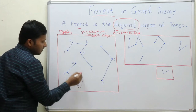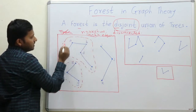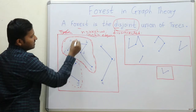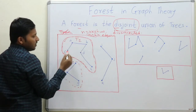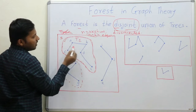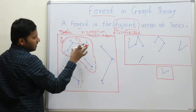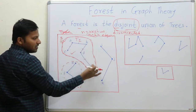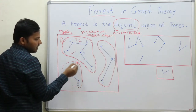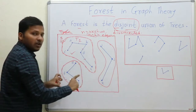Individually, each of these components is a tree. They individually satisfy the tree property. We can call them T1 — it has 5 vertices and 4 edges with no cycle, so it is a tree. Similarly, the second component is a tree, and the third component is also a tree. But now they are disconnected.